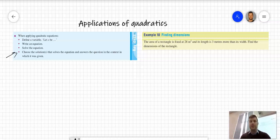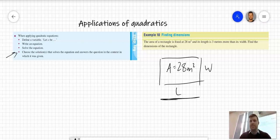The example here is Example 18: The area of a rectangle is fixed at 28 meters squared. Let me draw that - here's a rectangle with area 28 m². Its length is 3 meters more than its width.